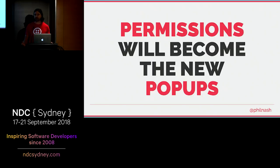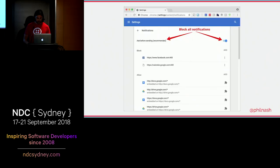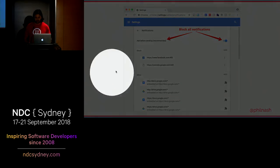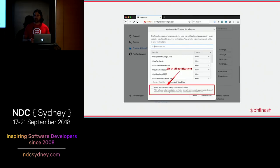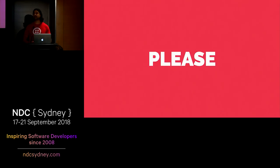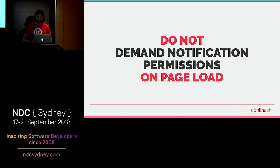If users complain enough, perhaps the browsers will eventually remove the feature entirely. When the user reads that article on HowToGeek on how to stop permissions being shown, they get sent to a Chrome settings page buried about three levels of navigation deep. They can choose to block specific sites — I've blocked Facebook and Google Calendar — but there's a button at the top to block everything. Same in Firefox: "Block new requests to allow notifications." What's nice is that anybody who already has permission can continue to. It just means no other website can ever ask again. So please, for the good of the web, do not demand permissions on page load.